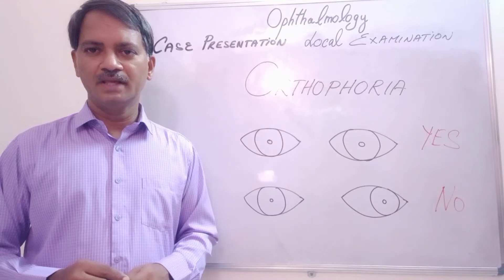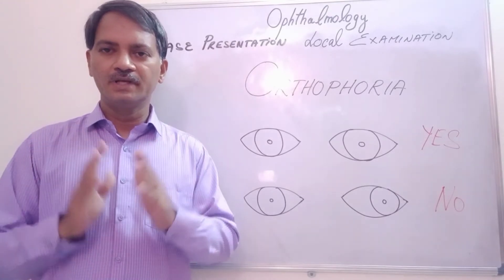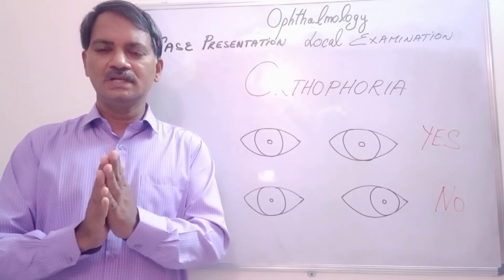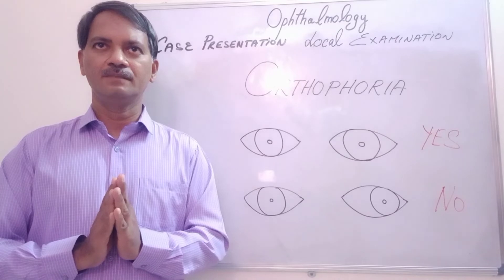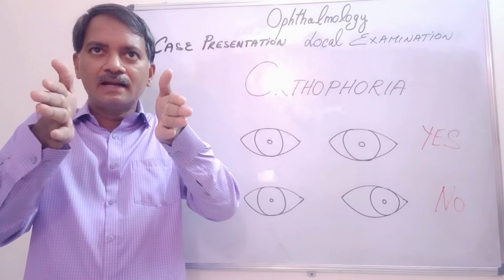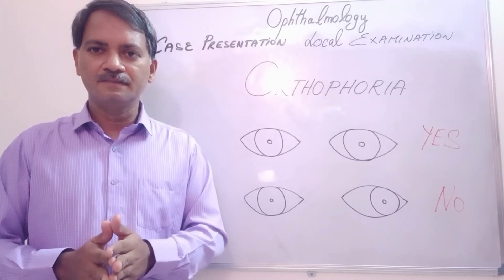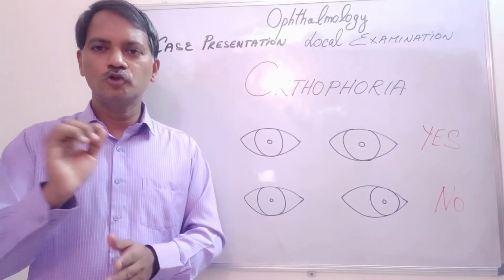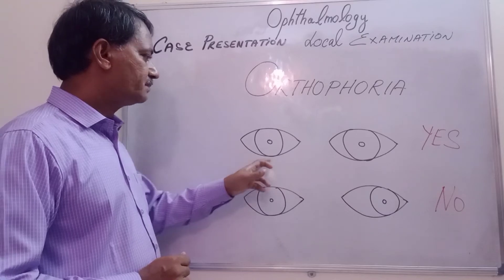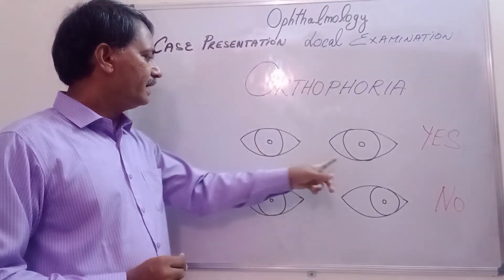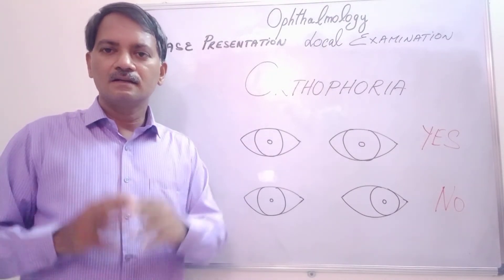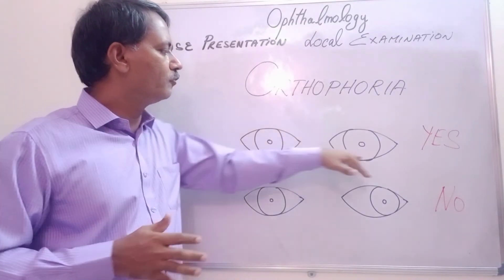The next topic is whether the eyes are orthophoric or not. What do we mean by orthophoria? When a person is asked to look at a distance in front of them, if both eyes are parallel or looking in the same direction, the eyes are said to be orthophoric. I have drawn two pictures here. In the first picture, the cornea of both eyes is in the center and they are parallel — these eyes are orthophoric.